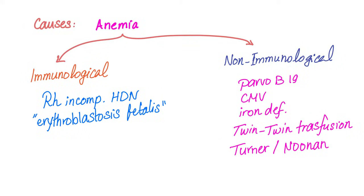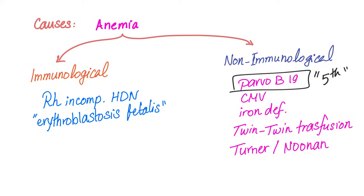What are the causes of hydrops fetalis? Anything that causes severe anemia. It could be immunological, such as RH incompatibility, or non-immunological, such as Parvovirus B19 — we call this fifth disease. Let me know in the comments why we call it fifth disease. Other causes include CMV, iron deficiency anemia, twin-to-twin transfusion leading to anemia, Turner syndrome in females, and Noonan syndrome in males — that's why we call Noonan syndrome male Turner syndrome. I have a great mnemonic called the mushroom mnemonic about Noonan syndrome, so make sure to search for that video.